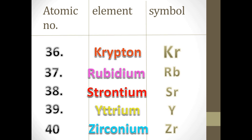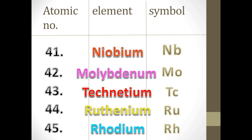The 37th element is Rubidium and its symbol is Rb. The 38th element is Strontium and its symbol is Sr. The 39th element is Yttrium and its symbol is Y. The 40th element is Zirconium and its symbol is Zr. The 41st element is Niobium and its symbol is Nb. The 42nd element is Molybdenum and its symbol is Mo. The 43rd element is Technetium and its symbol is Tc. The 44th element is Ruthenium and its symbol is Ru.